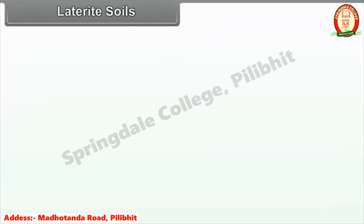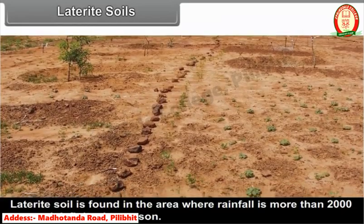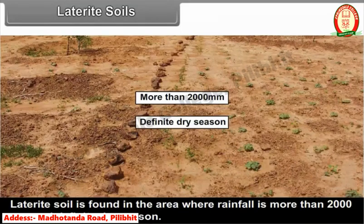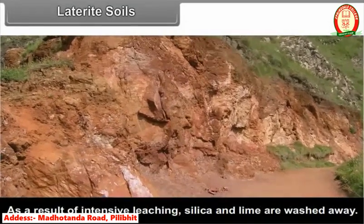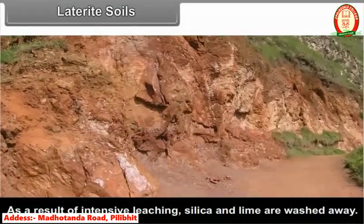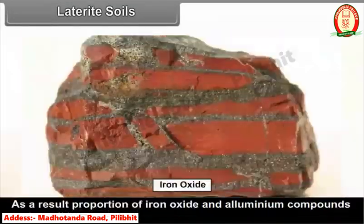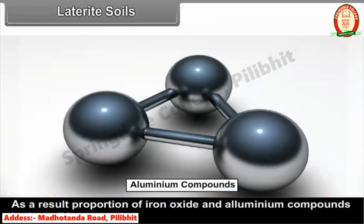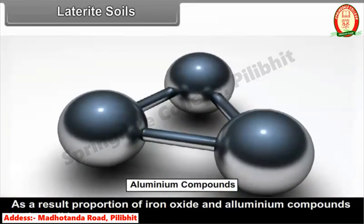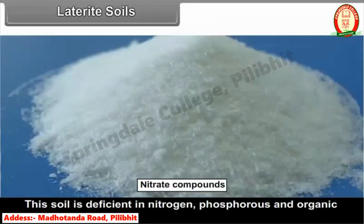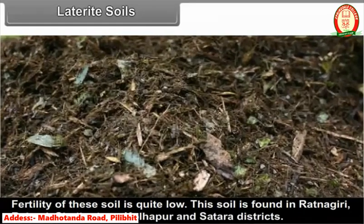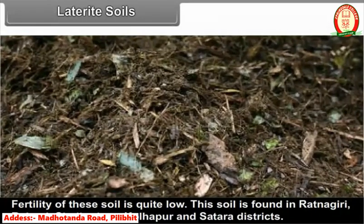Laterite soil is found in areas where rainfall is more than 2000 mm and there is a definite dry season. As a result of intensive leaching, silica and lime are washed away, and the proportion of iron oxide and aluminum compounds in the soil increases. This soil is deficient in nitrogen, phosphorus, and organic matter, so its fertility is quite low.